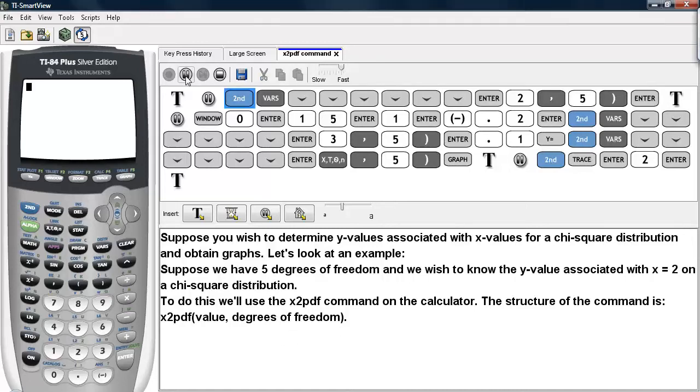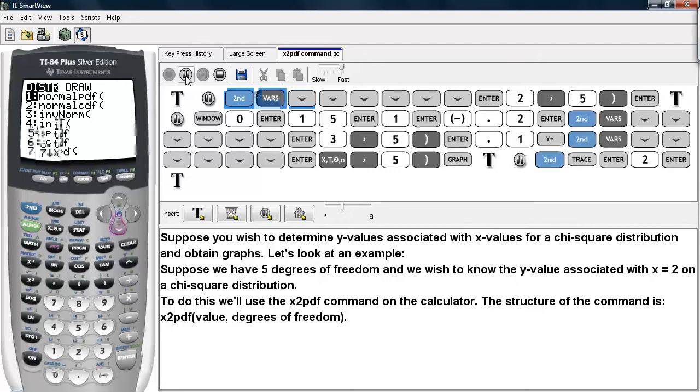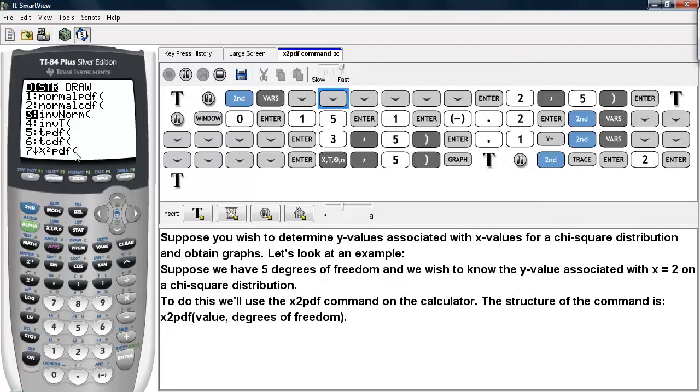So let's see this. We hit 2nd VARS to get to the chi-square PDF, and that is the command we're after right there. So we'll select that command and enter in the value, for our example is 2, and then the degrees of freedom.